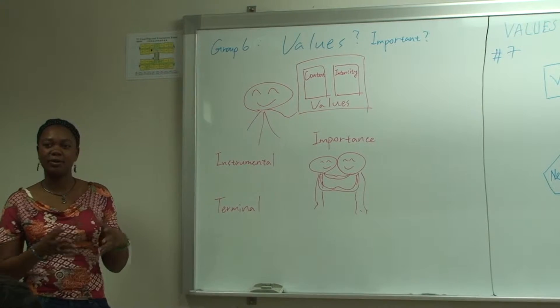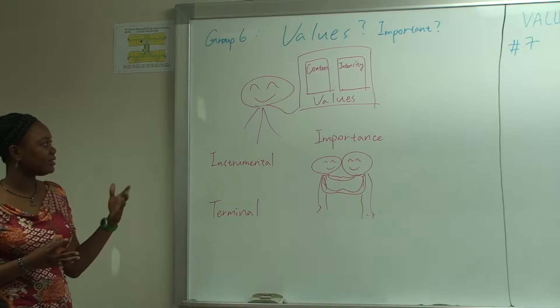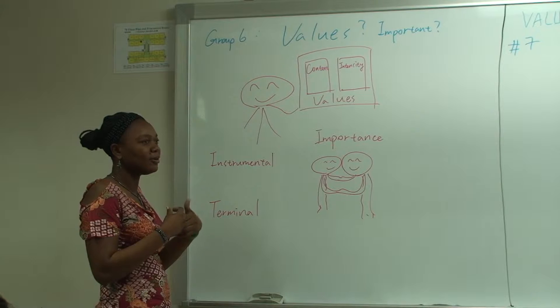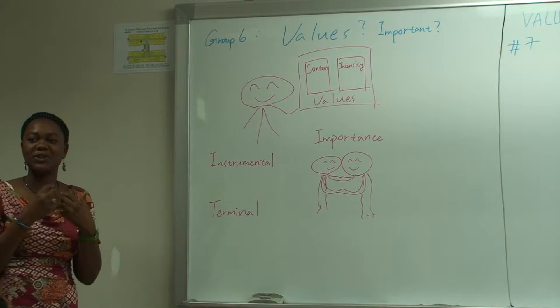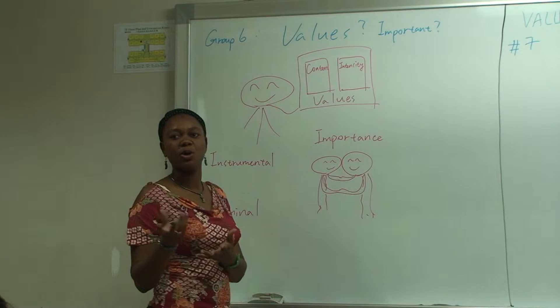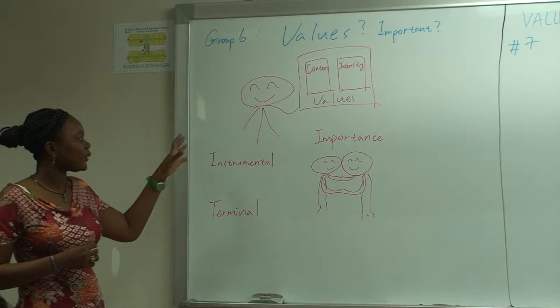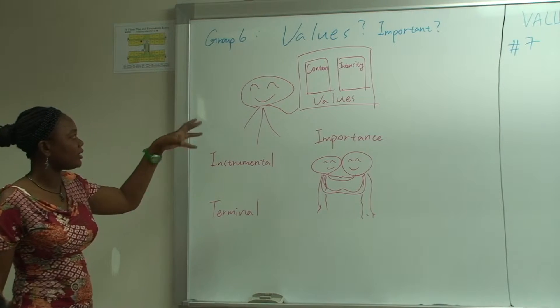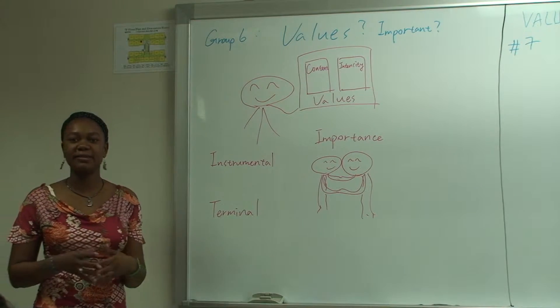Value is a kind of conviction that refers to a person's sense of right or wrong or what is desirable. And the value has two attributes. These are one attribute that we know has content and another that is intensity.